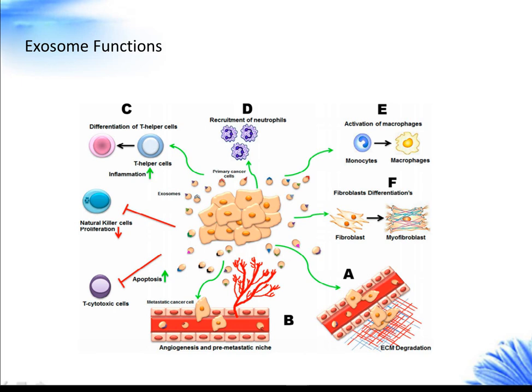For example, mRNA in exosomes has been suggested to affect protein production in the recipient cell. However, another study has suggested that mRNAs in exosomes secreted by mesenchymal stem cells (MSCs) are predominantly pre- and not mature mRNAs.